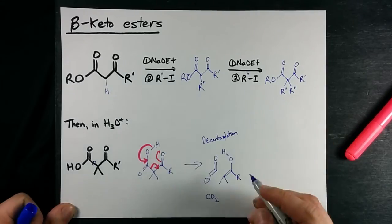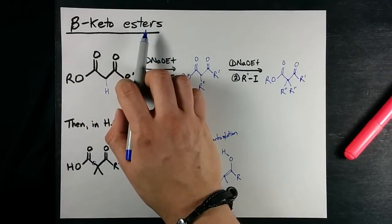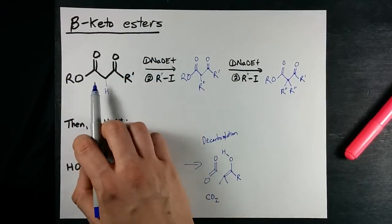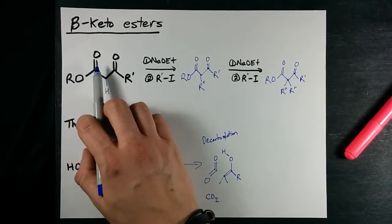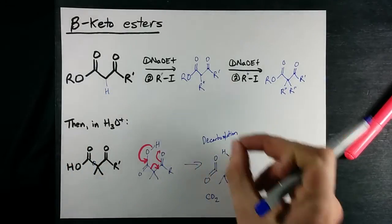And it's super common to do when you have a beta keto ester. In fact, sometimes we add this COOR group just to make these alpha protons more removable.